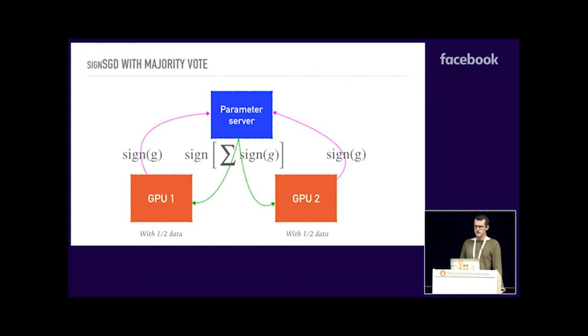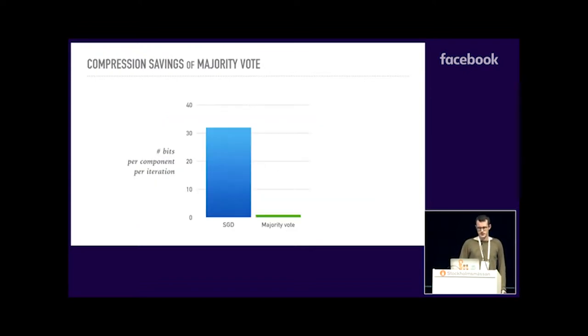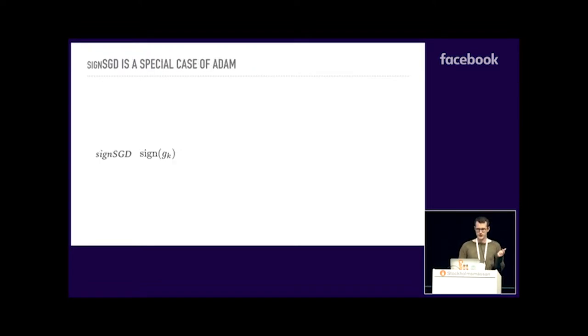And as we're going to see, majority vote actually has really nice theoretical properties. To reiterate, the compression saving of this algorithm is 32 times. 32 times less communication per iteration than full precision SGD. So I claim that everybody should care about this algorithm.